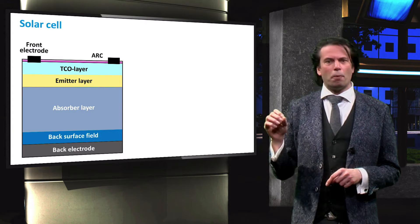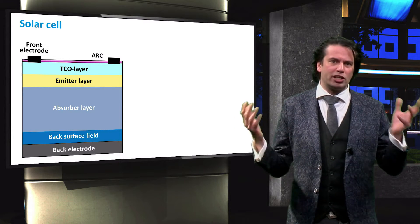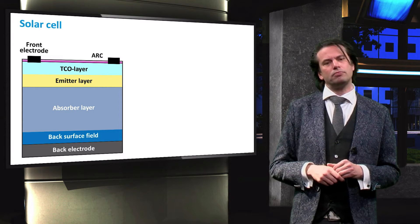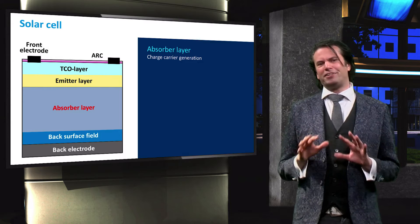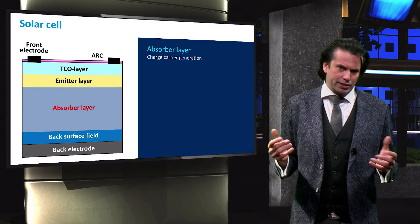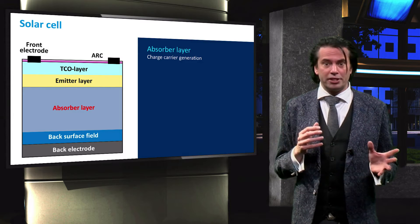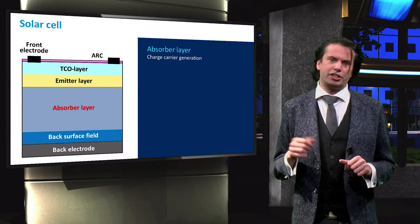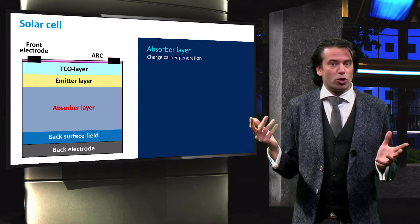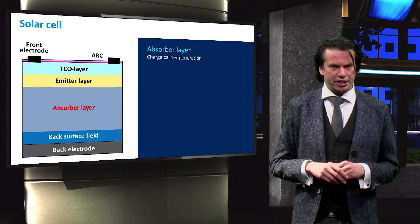We will base this solar cell on a p-type silicon absorber, even though some silicon cells can be made with an n-type absorber layer as well. The purpose of the absorber layer, as its name implies, is to absorb light. Through this absorption, minority and majority charge carriers are formed. In the case of a p-type absorber, electrons are the minority carriers and holes are the majority carriers.